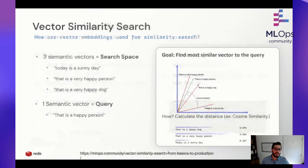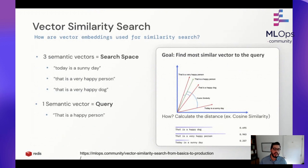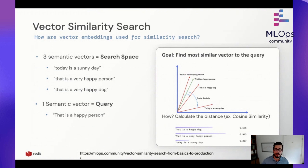We'll give an example here of similarity search and how this actually works. I wrote a blog post on this with Demetrius and the crew at MLOps Community — if you have more questions about how this kind of search works, visit that link. So three semantic vectors make up our search space, represented by the three red lines in the plot to your right. One semantic vector is our query: 'that is a happy person.' Each of these vectors was created from a HuggingFace or OpenAI model and makes up our vector search space.